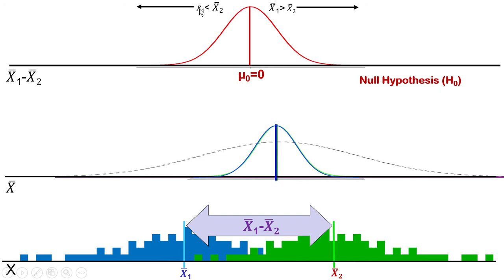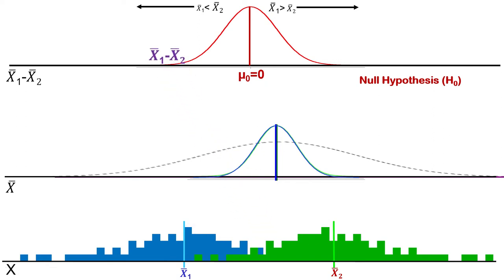Everything to the left means that mean one is smaller than mean two, if this is a distribution of mean one minus mean two. And everything to the right means mean one is bigger than mean two, because these are differences — everything to the left would be negative, everything to the right is positive. So this is the null hypothesis setup — this is how our data came to be the way it is according to the null hypothesis. And according to the null hypothesis, there's a certain probability associated with finding our sample mean difference. In this case it's very small — I put it way out in the tail. But the confidence interval is a different situation.